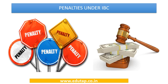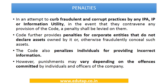The code provides elaborate penalties to curb fraudulent and corrupt practices by any person — be it insolvency professional agencies, insolvency professionals, or information utilities. Penalties are also specified for corporate entities not declaring assets or fraudulently concealing them, and for individuals providing incorrect information. The quantum of penalties varies depending on the offenses committed.